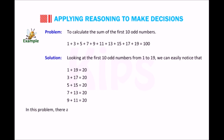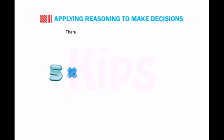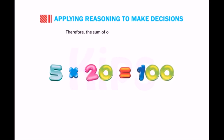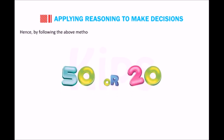In this problem there are five pairs. When these are added individually, the answer comes out to be 20 as shown above. Therefore the sum of odd numbers is 5 × 20 = 100. Hence by following the above method we can calculate the sum of the first 20 or 50 odd numbers easily.